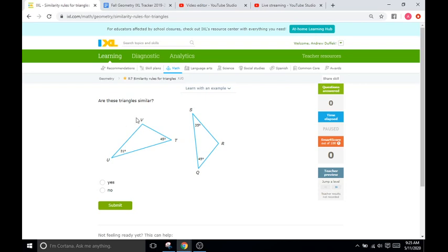This question is simply just asking, are these triangles similar? Well, we don't know anything about the sides, so we're going to look at the angles here. Is angle U and angle S, are those two angles the same? 31 and 35? No. So therefore, the triangles are not going to be similar. They need to be the same for all three angles. So, no.